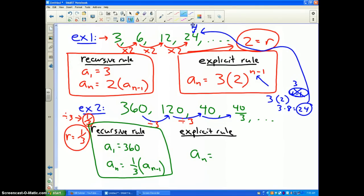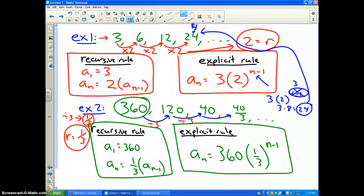The explicit rule: the nth term is equal to the first term which is 360 times the common ratio 1 third to the n minus 1 power. And that's how you would generate any nth term in this sequence. That's it. That's how you write recursive and explicit rules for geometric sequences.